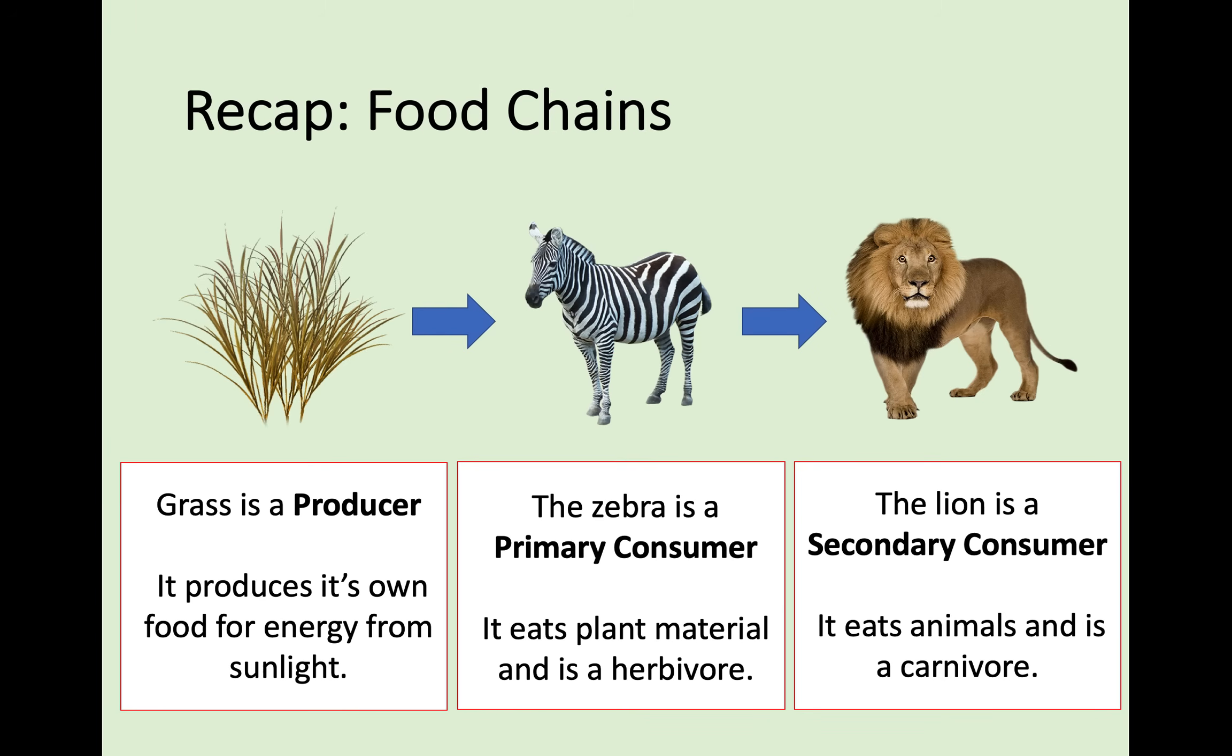As a bit of a recap from a previous lesson, hopefully you remember this diagram that we looked at from food chains. We have a green plant at the start that's a producer. It produces its own energy from sunlight. That is then consumed by the first consumer, a primary consumer, in this case a zebra, which is then consumed by a secondary consumer. These arrows show the direction of energy flow in a food chain, moving from the producer to primary consumer to secondary consumer, sometimes a tertiary consumer as well.